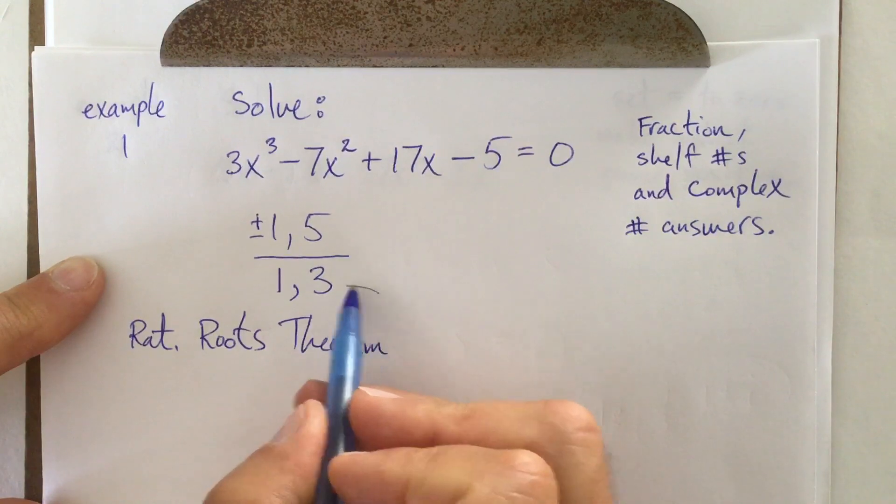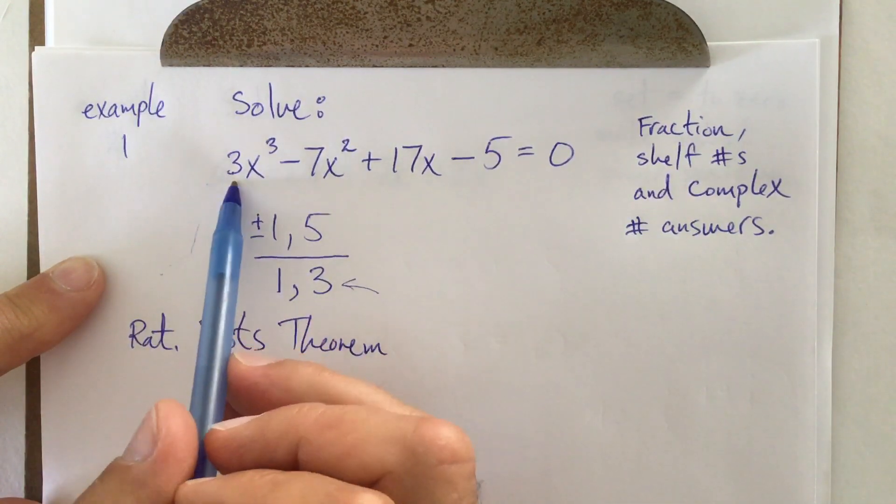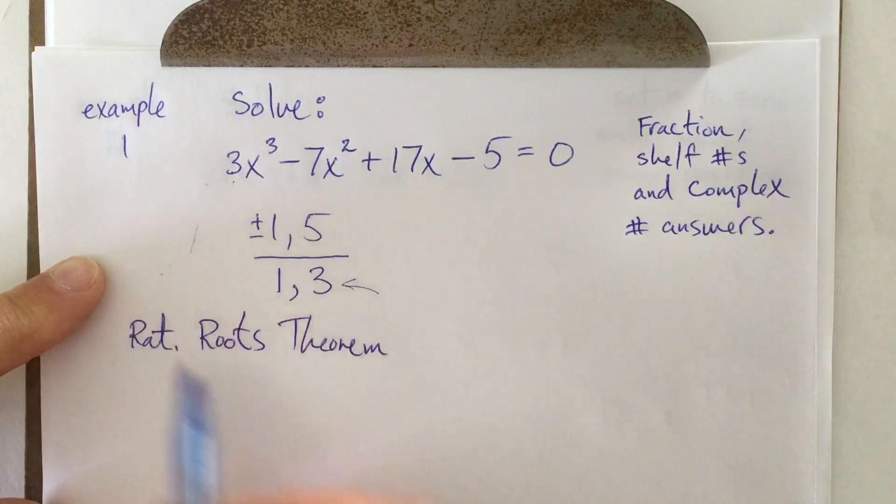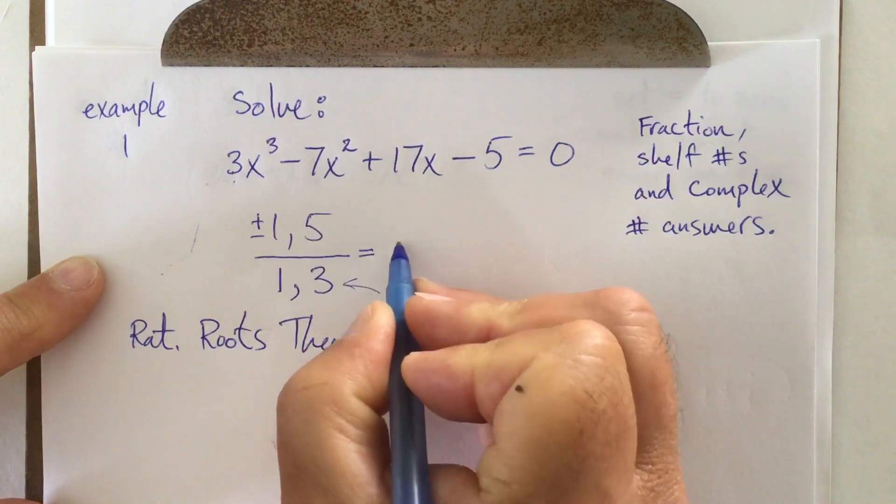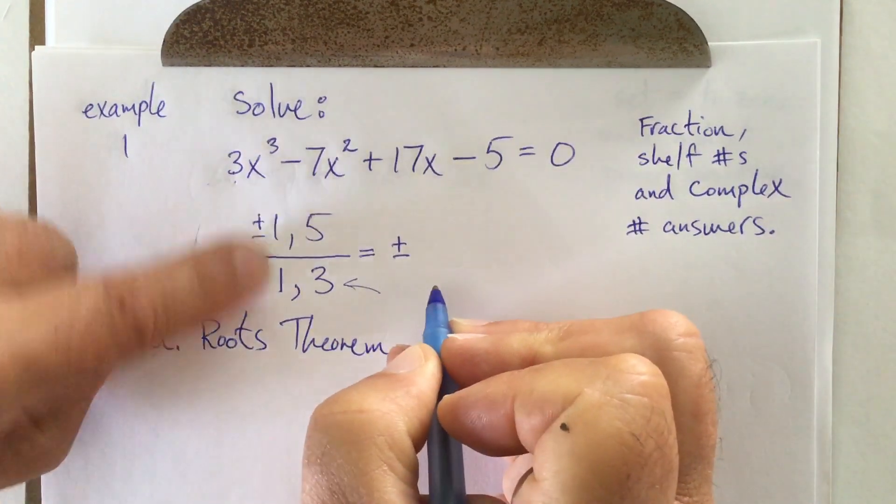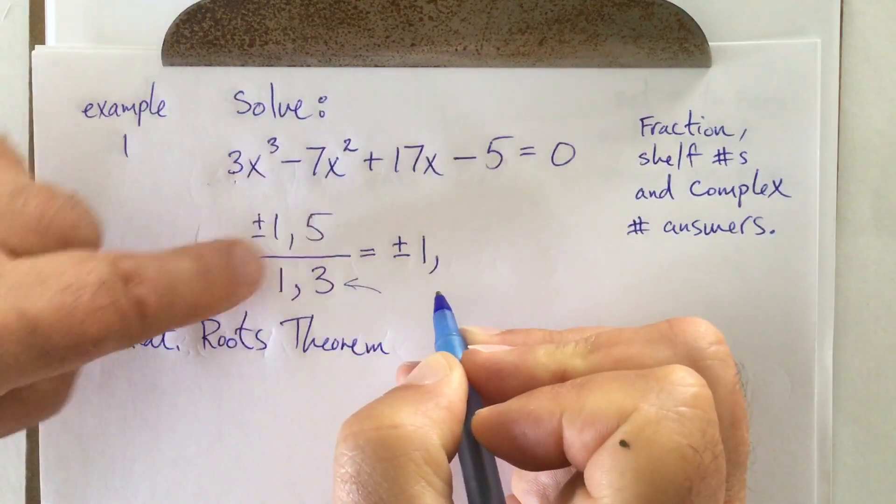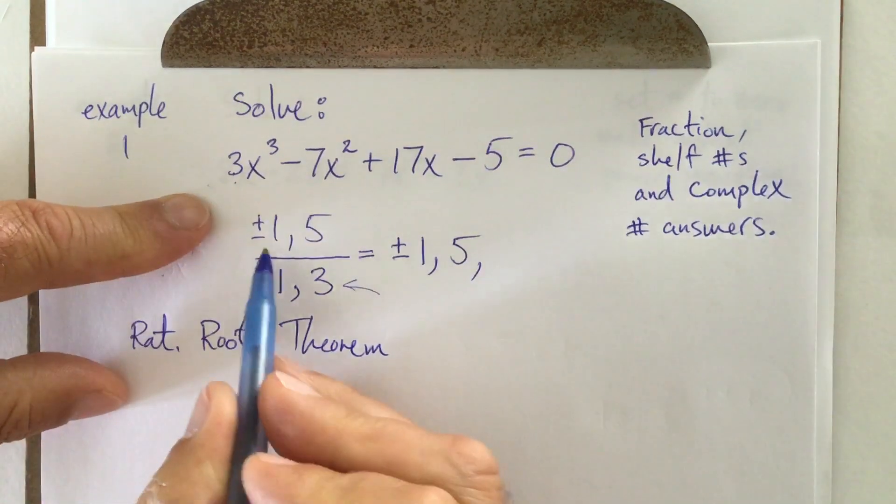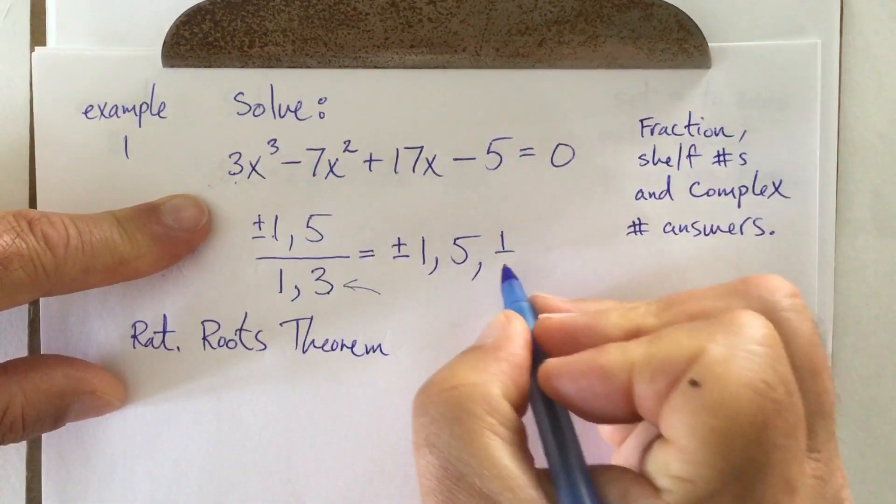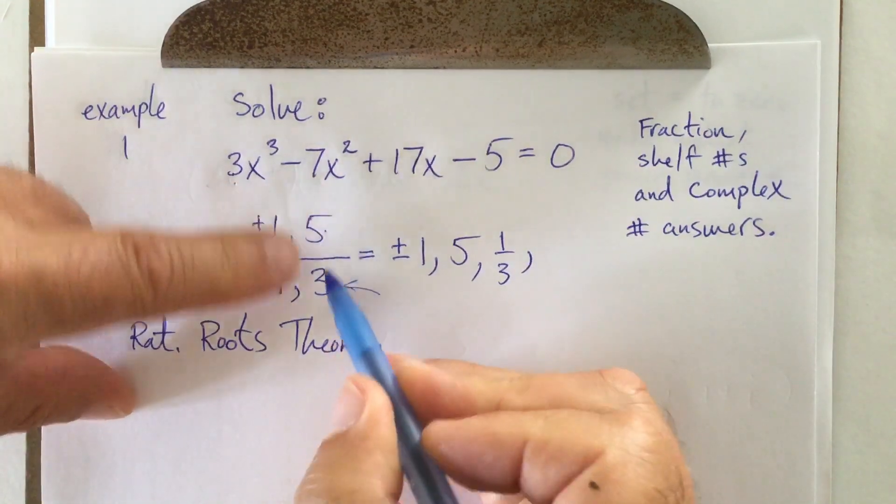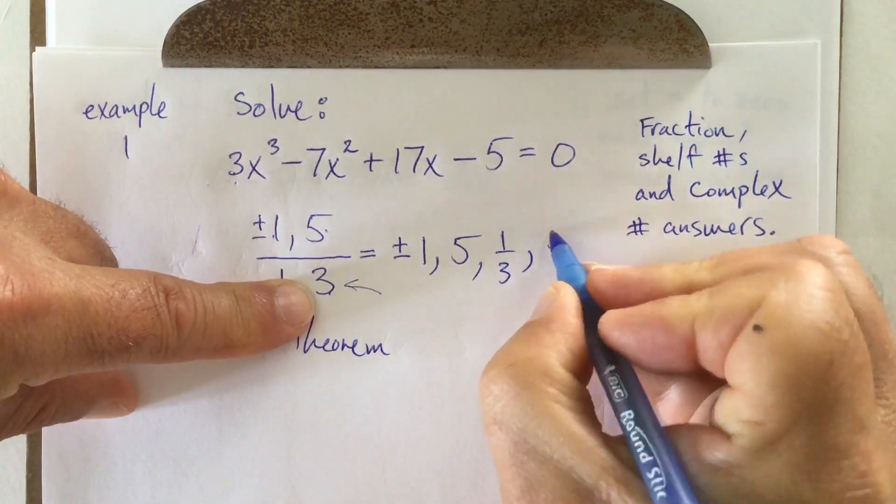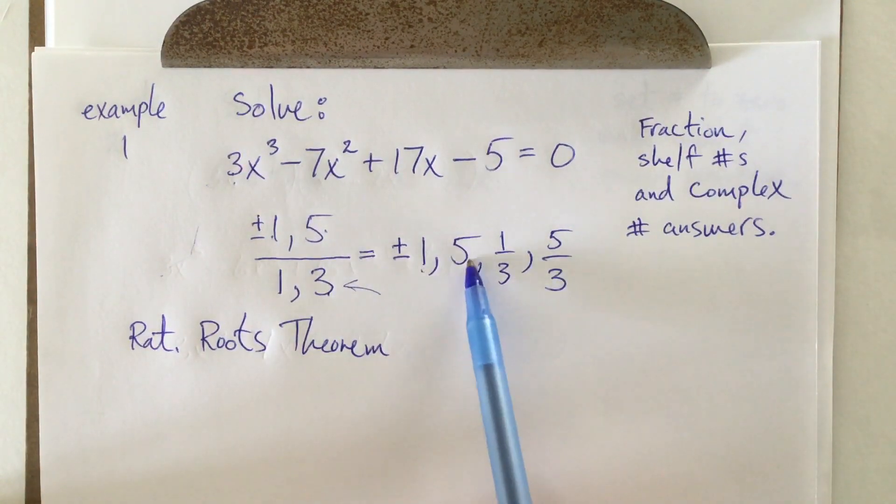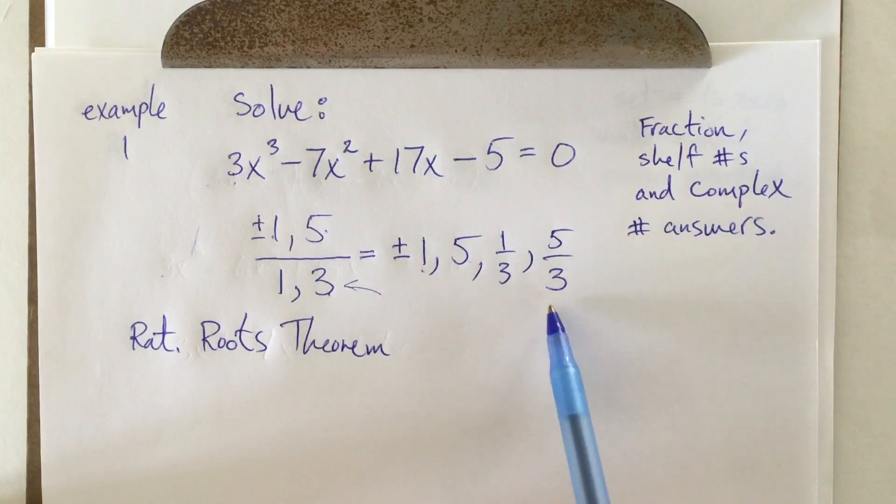We've never had a bottom part to it because that's always been a one. So you'll see in my next two examples, I use this, but what does it really mean? It means we could have a positive or negative one over one or five over one. Or my shelf number might be one third. Or my shelf number could be five thirds. So when I do synthetic division, I don't always get to start with a whole number. Sometimes I might have to use a fraction.